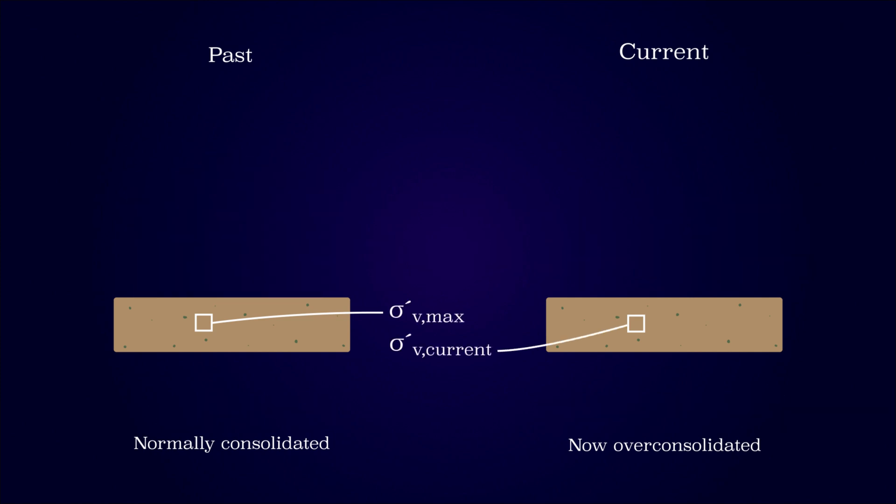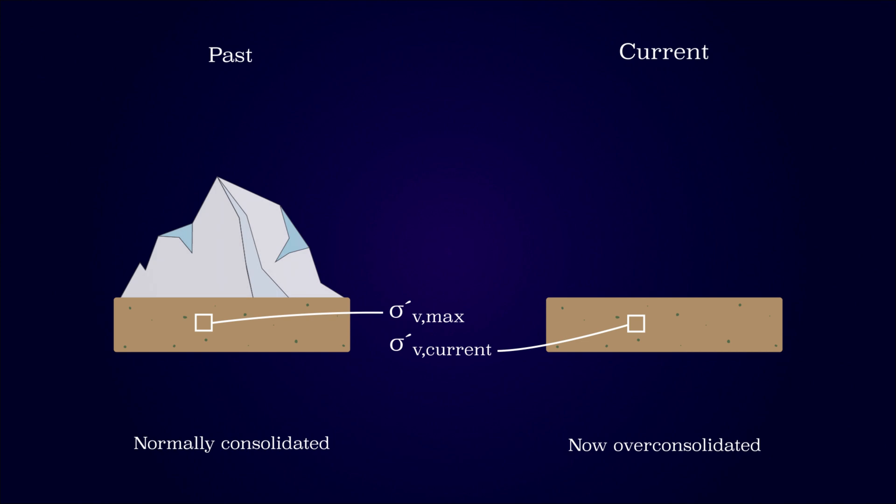The structure could also be substituted with an ice sheet. When the ice sheet melts, the soil will be overconsolidated, since the load from the ice sheet is removed.